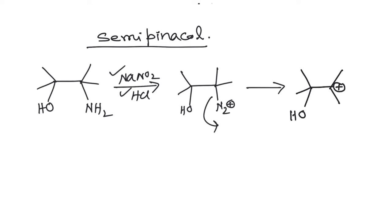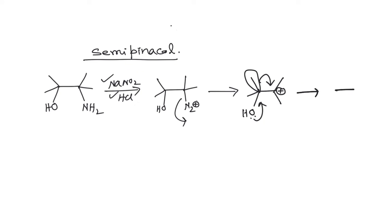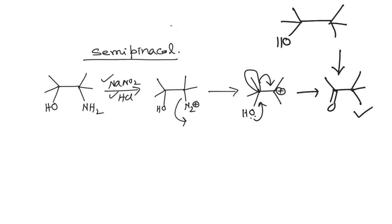We encountered this same carbocation in our discussion of the pinacol rearrangement. The OH will push its lone pair and this methyl group will migrate, giving you this product. This is the same product obtained by the pinacol-pinacolone rearrangement of the corresponding diol using H2SO4. Both give the same product, but in this case we call it semi-pinacol because the starting material is not a pinacol — a 1,2-diol is called pinacol, but this compound is not one. That is why it is called semi-pinacol rearrangement.